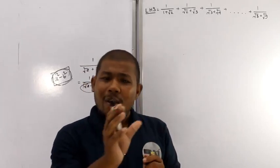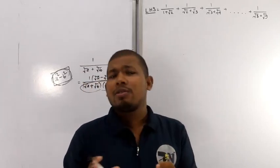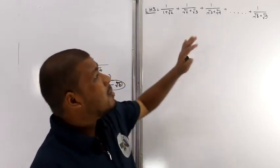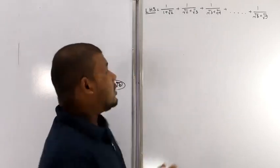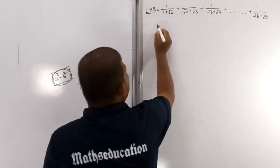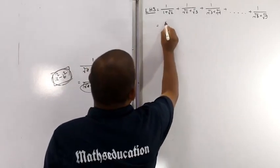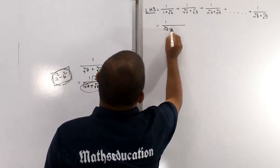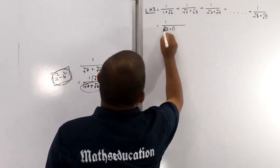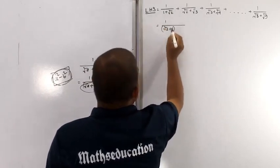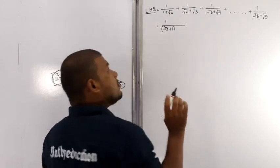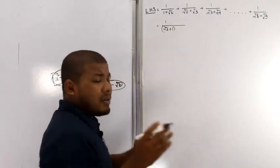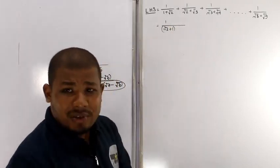So I will try to calculate this directly. I will write 1 divided by root over 1 plus root over 2. I will rationalize the denominator.